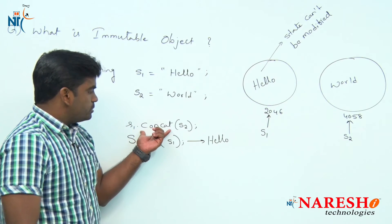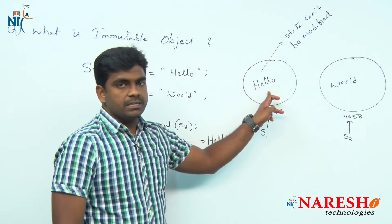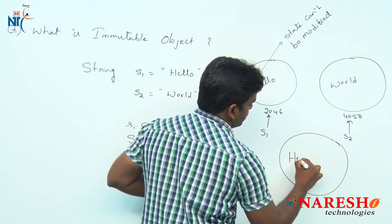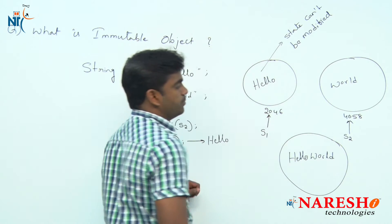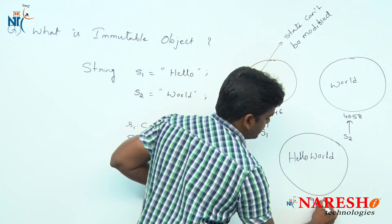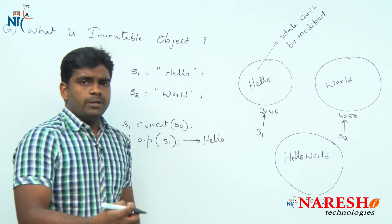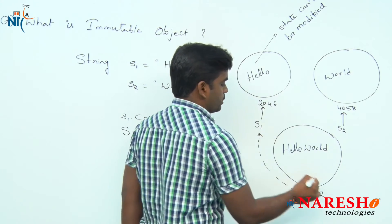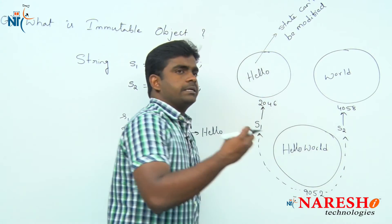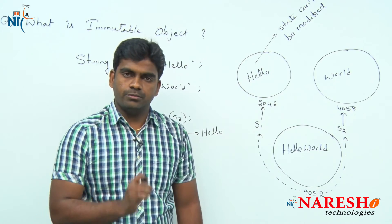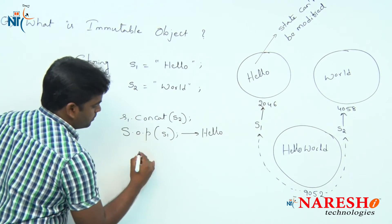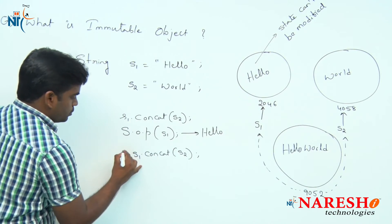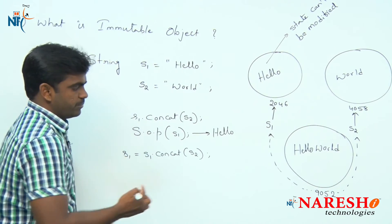It will not modify the existing object. Instead, it will create a new object at another location with the complete value 'hello world' — for example at location 9052. After object creation you have two options: you can collect the result into an existing variable like s1 or s2, or you can collect it into a new variable like s3.